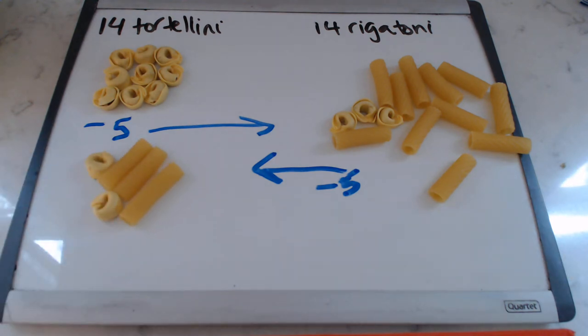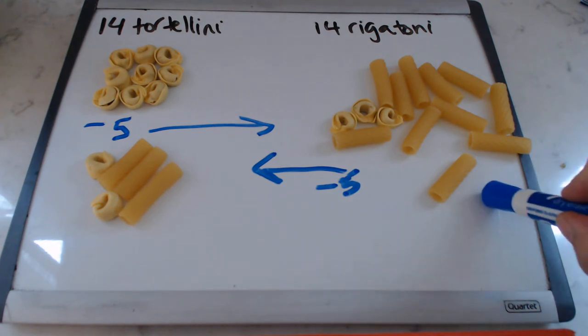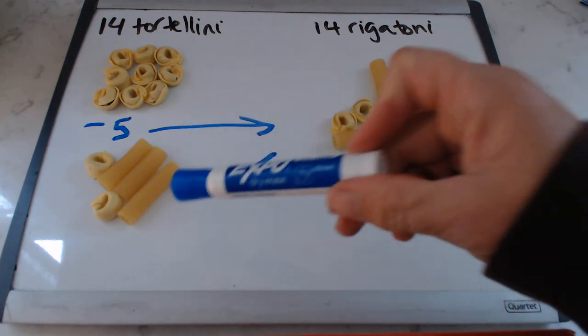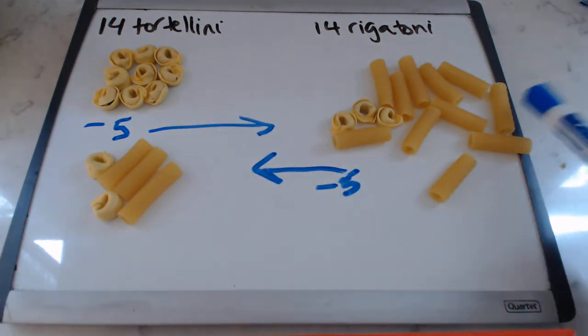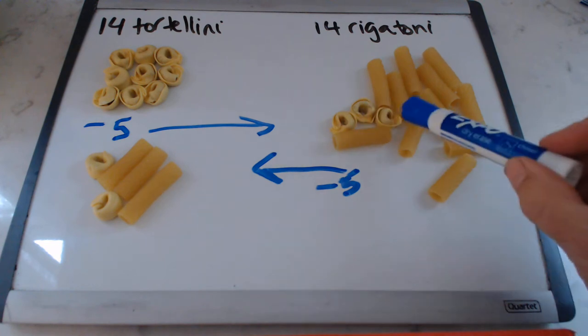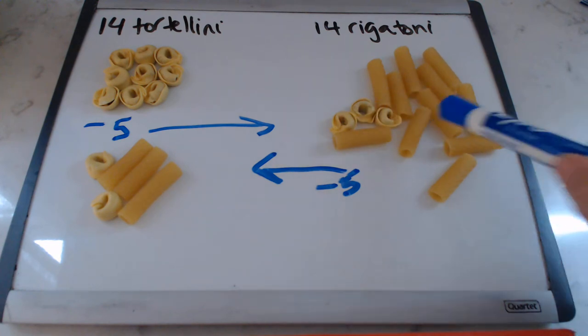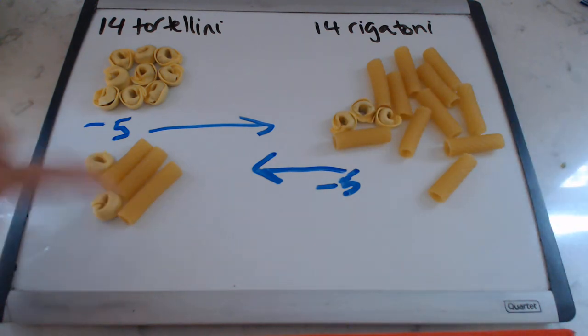But that wasn't the question. The question was, do you have the same number of tortellinis in the side that used to be all rigatonis as you have rigatonis on the side that used to be all tortellinis? And the answer is yes, you do. You've got three, I call them strangers, over here and three strangers over here.